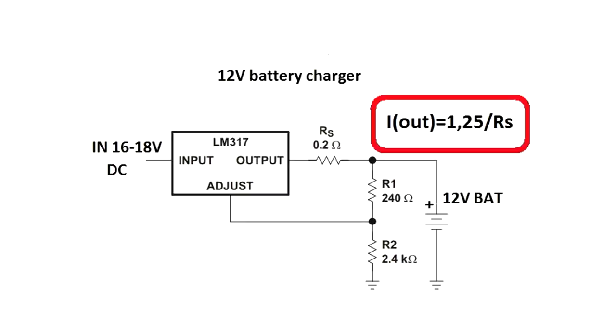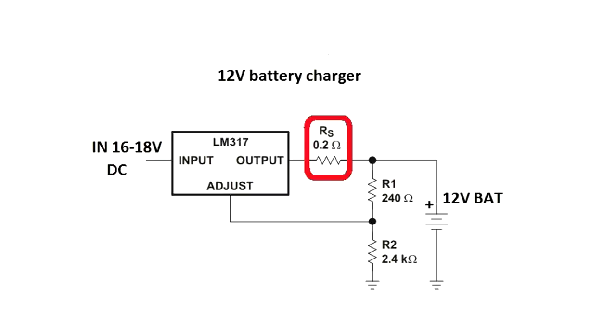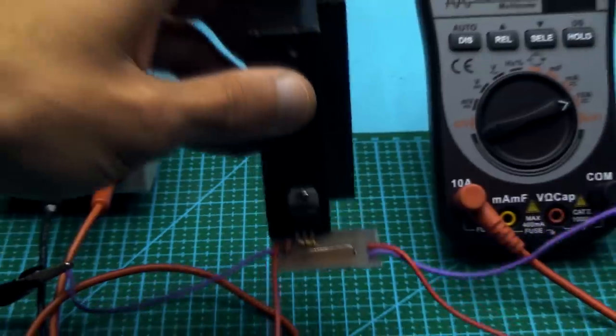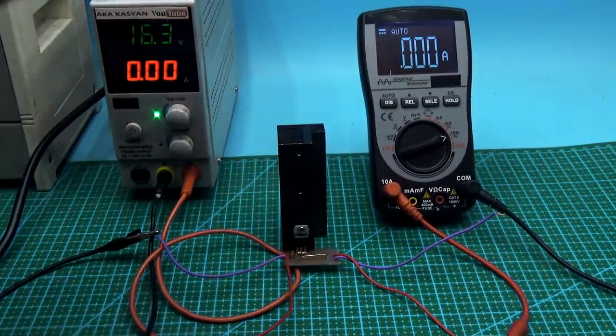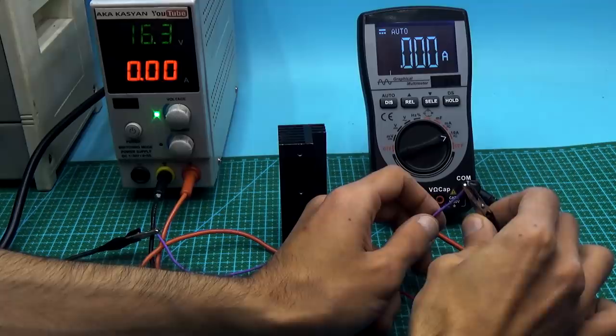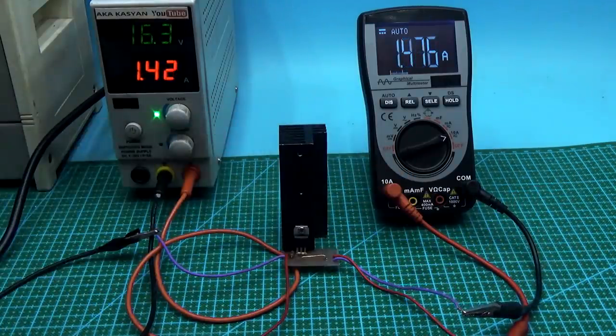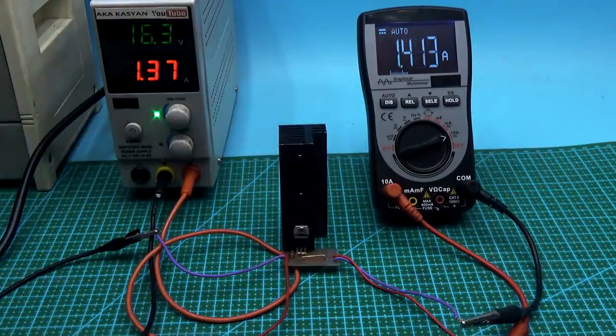The output current of the circuit can be calculated by this formula, where 1.25 is the voltage of the reference source of the LM317 chip and R is the resistance of the current sensor. To obtain a maximum current of 1.5A, the resistance of the resistor should be 0.8 ohm, but on the diagram is 0.2 ohm. The fact is that, even without a resistor, the maximum current at the output of the chip will be limited to the specified value. The resistor is more for insurance and its resistance is reduced to minimize losses.